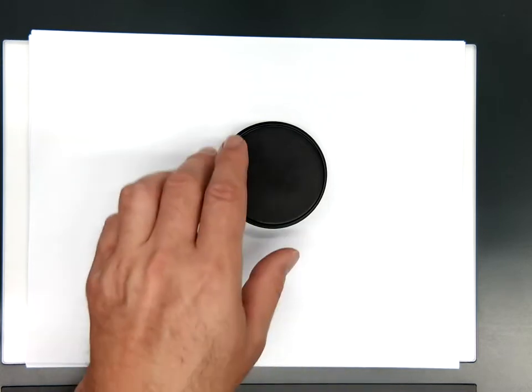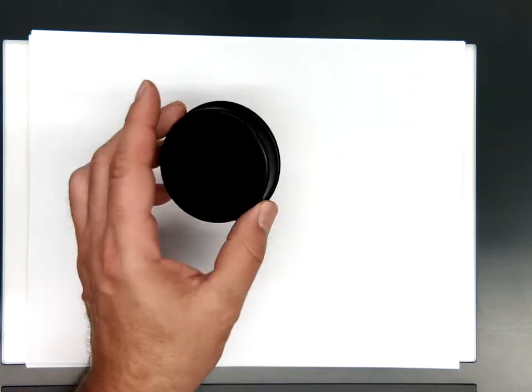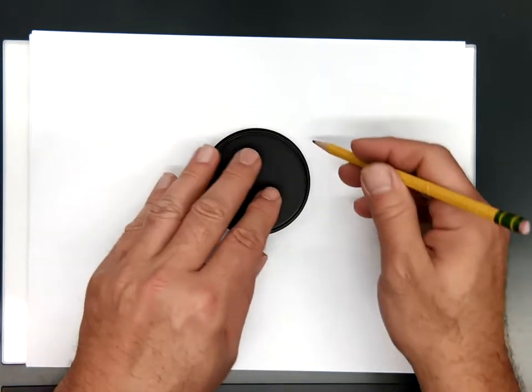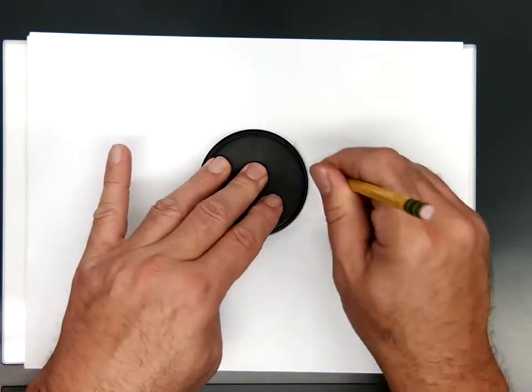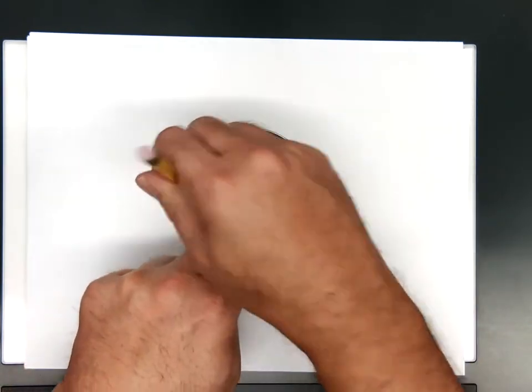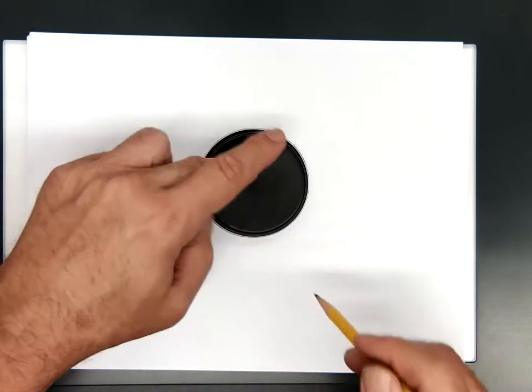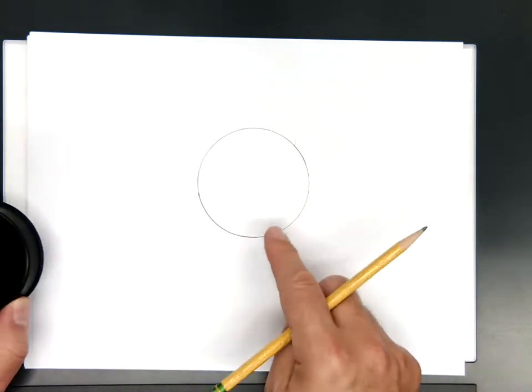Now, here's what we don't want to do. We don't want to find something that's round, like this lens cap, and then trace over it, or a coffee cup, or a saucer from the kitchen. See, as soon as you do that, you're no longer sketching.